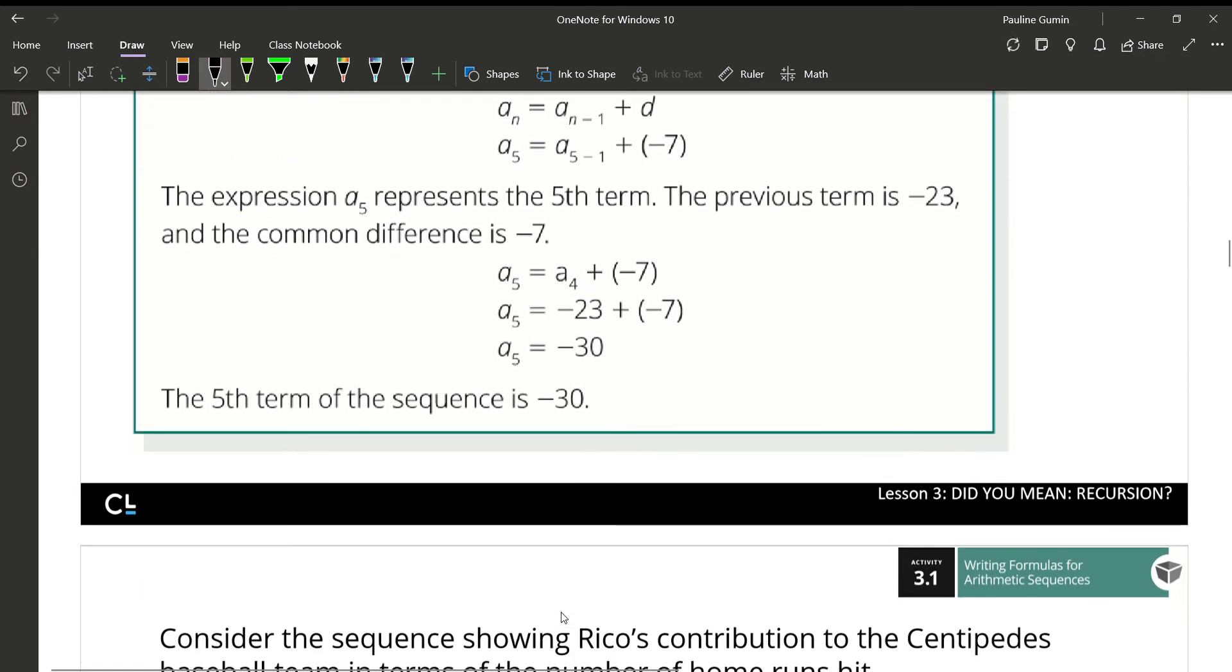So, that can get pretty tedious, especially if you only have the first couple terms. What if I asked you to find the 20th term? That would be crazy doing it this way. That's why we have the explicit formula. The explicit formula helps us calculate any term, as long as we have the first term and the common difference. So, let's put that into play.